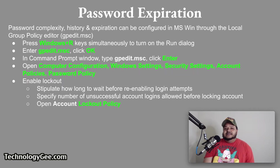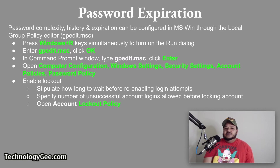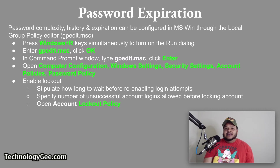Password complexity, history, and expiration can be found in Microsoft Windows through the local group policy editor, also known as gpedit.msc. To start gpedit, press Windows and R simultaneously to open the run dialog, enter gpedit.msc in the empty box, and click OK. Alternatively, in the command prompt, type gpedit.msc and press Enter.